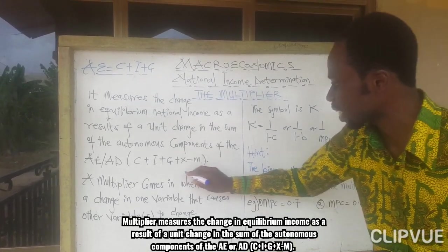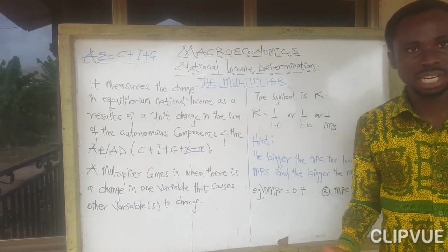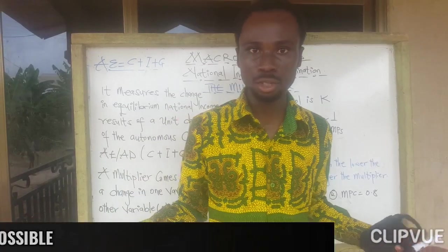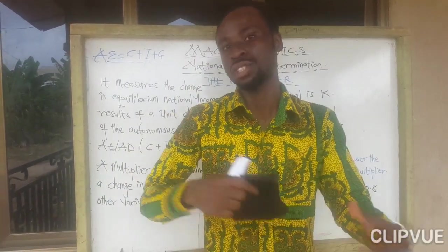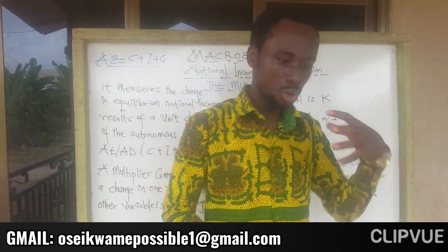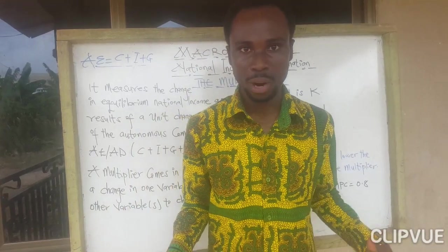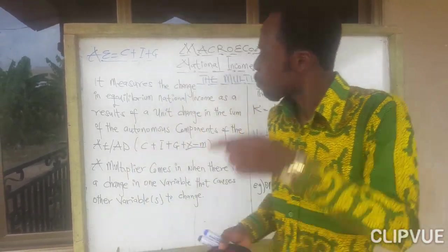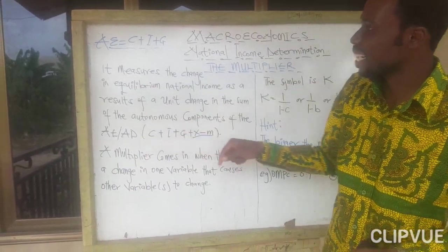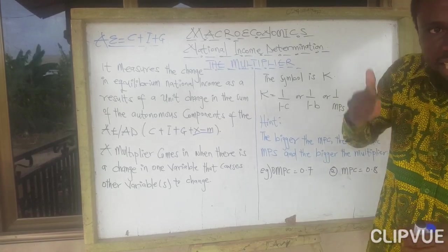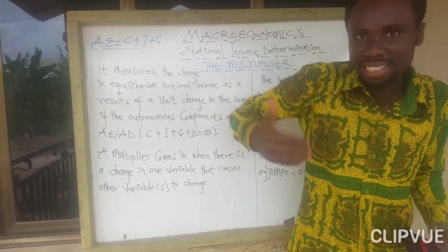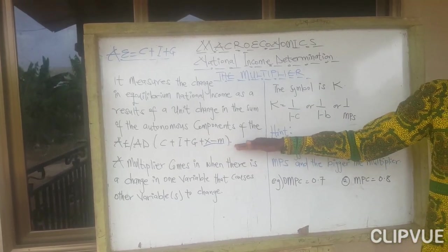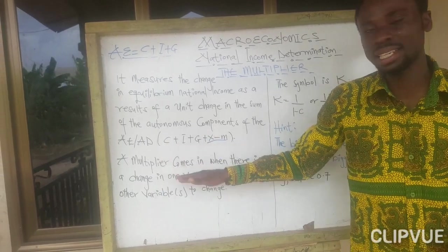If you are focusing on the closed economy, exports and imports are not going to be part of it. Now, we know that marginal propensity to consume and marginal propensity to save refer to the change that occurs in savings and consumption as a result of a change in income. The multiplier is the instrument used to measure that change — specifically the change in equilibrium national income or aggregate expenditure as a result of a change in any of these autonomous components. These components are called autonomous because when they change, the equilibrium national income automatically changes.